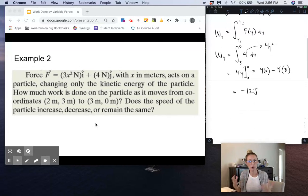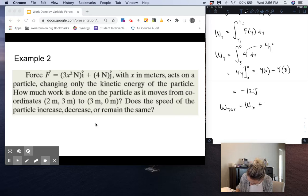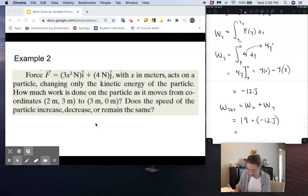Now if we're finding the total amount of work done, we add up the work done in the x direction plus the work done in the y direction. So this ends up being 19 plus negative 12 joules. We get 7 joules, so our total work done on the particle is 7 joules.